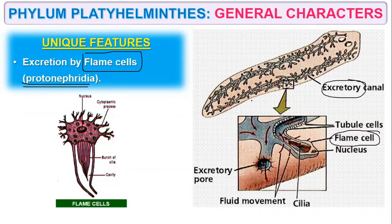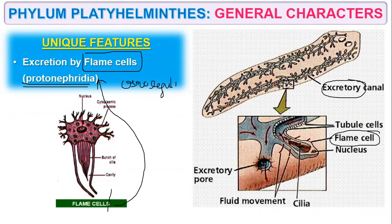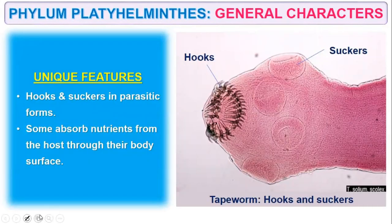The flame cell acts as the organ for excretion, otherwise known as proto-nephridia. Proto-nephridia is the organ of excretion in Platyhelminthus. The same organ also helps in osmoregulation — so flame cells maintain osmoregulation as well.